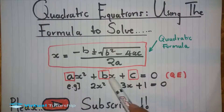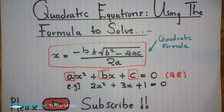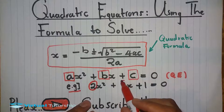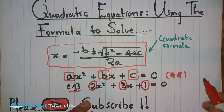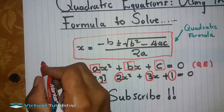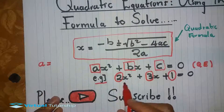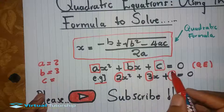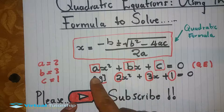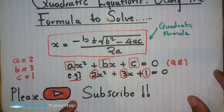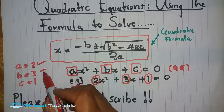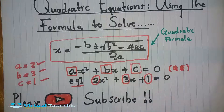So once we know the values of a, b, and c, we can substitute them into the quadratic formula. For example, in a given equation, you identify a, b, and c as constants or coefficients, and then substitute those values into the quadratic formula.